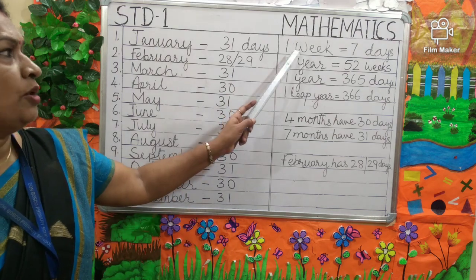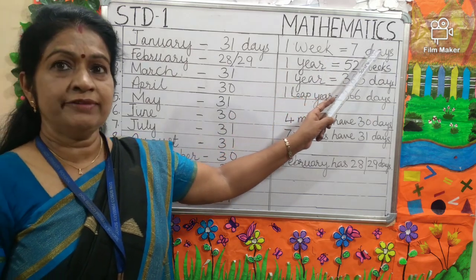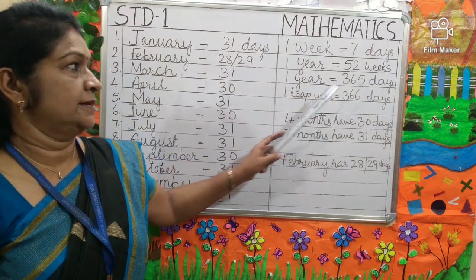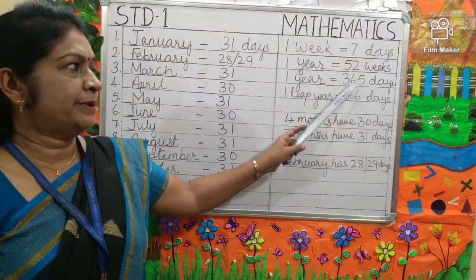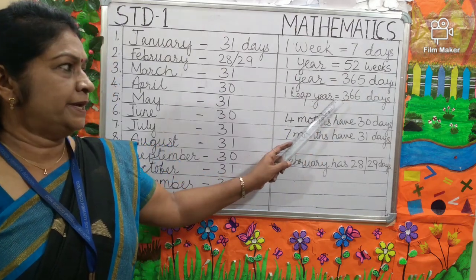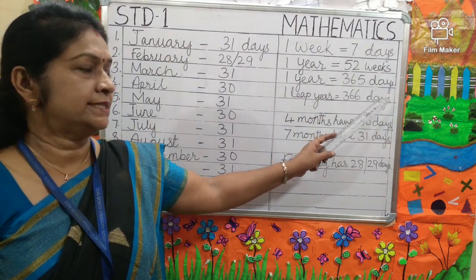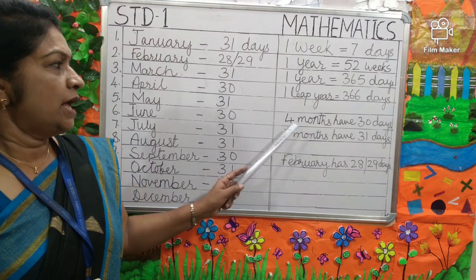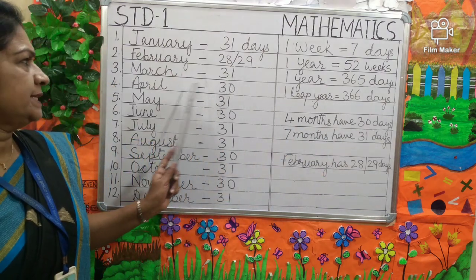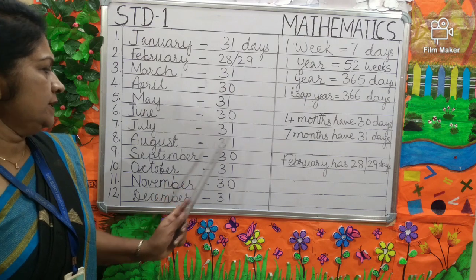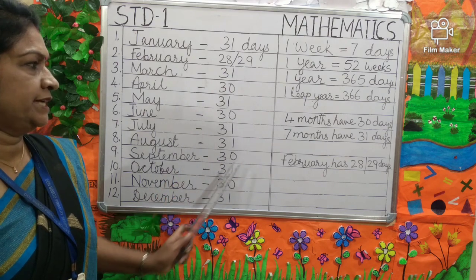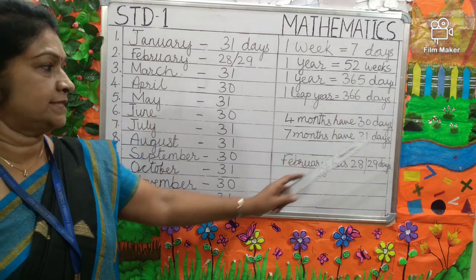One week is equal to 7 days and one year is equal to 52 weeks. One year has 365 days. Four months have 30 days — which are April, June, September and November.